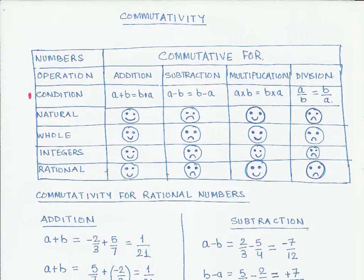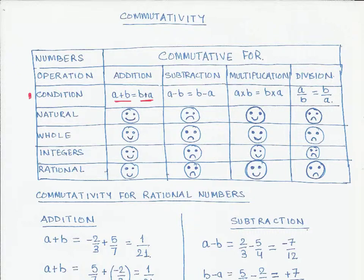The second column gives an idea of the commutative property for different numbers. For addition, the condition is: we take any two numbers, a and b, we first add a plus b and then add b plus a, then compare the results. If both are equal, then those numbers follow the commutative property under addition.